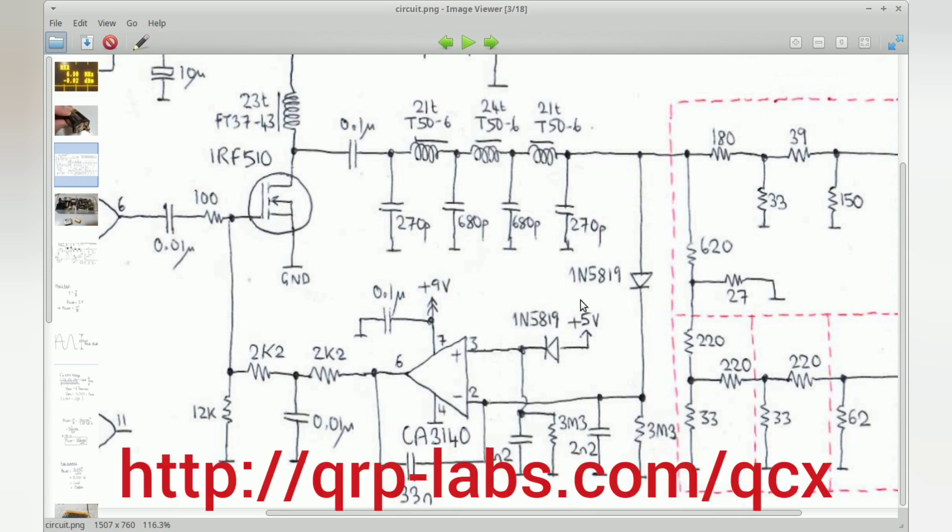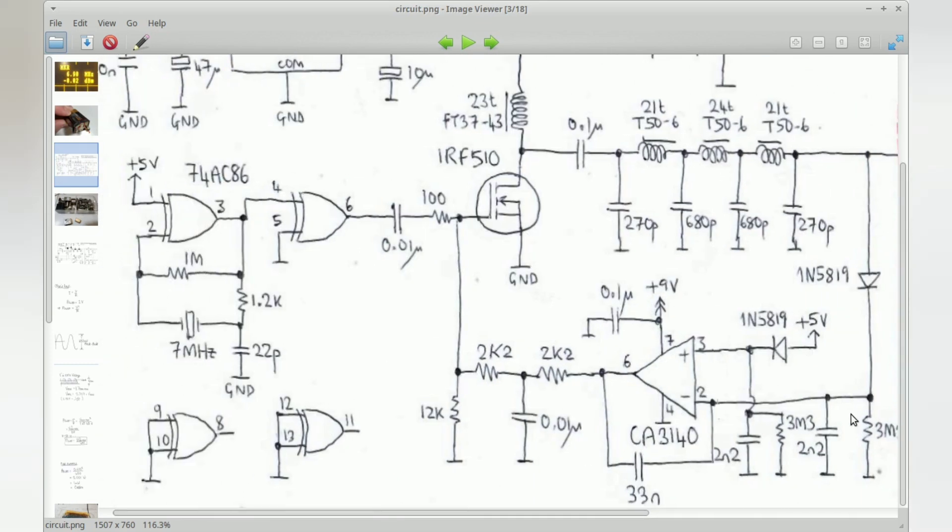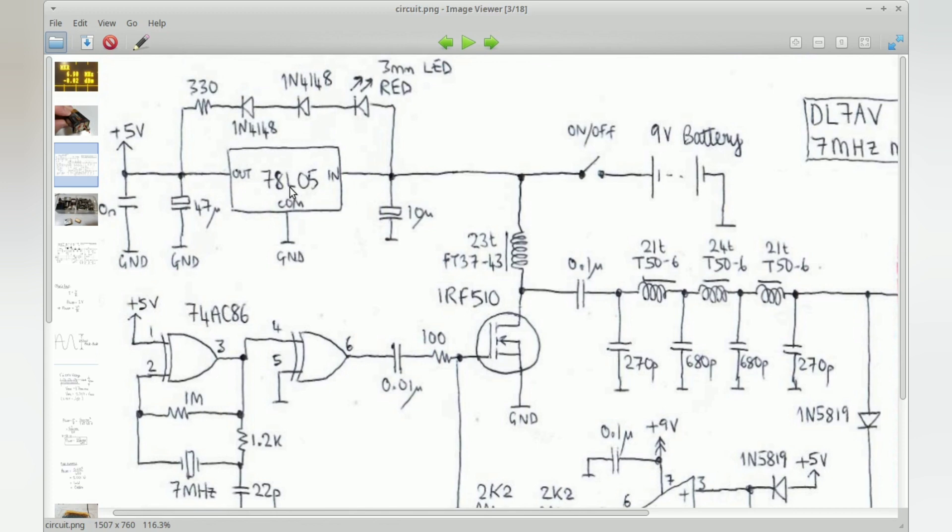Inside I used 1N5819 Schottky diodes just because I have a large number of them from the QCX 5 watt transceiver kits. I didn't make any attempt to match the parameters. Similarly, the voltage regulator is just the basic 78L05.